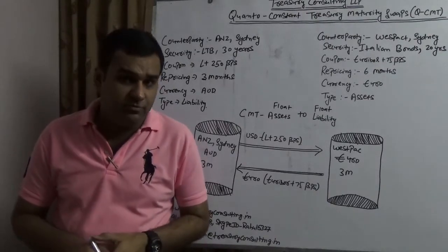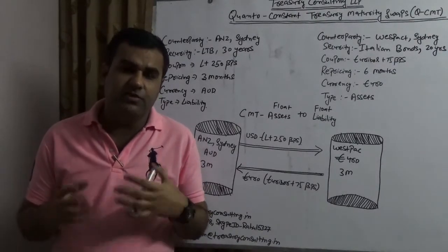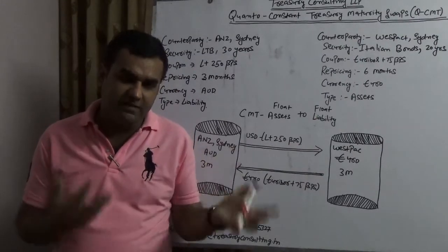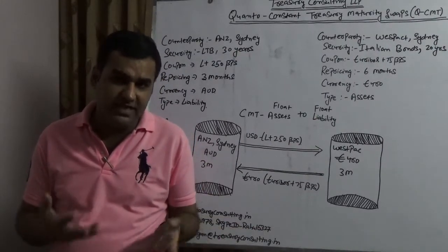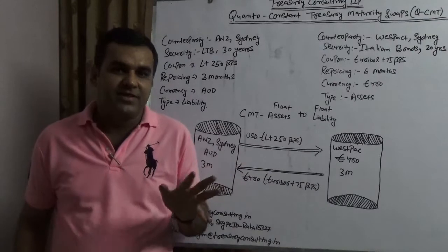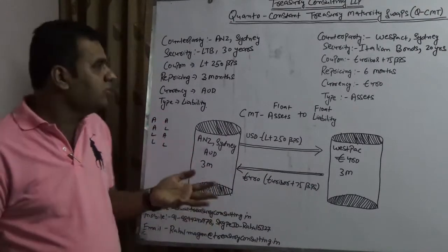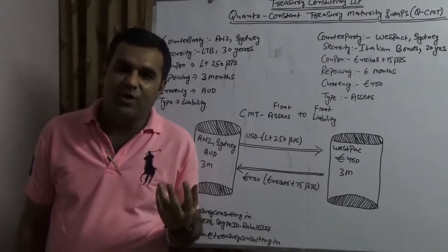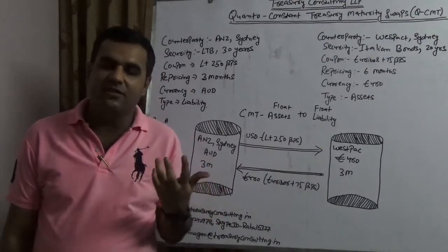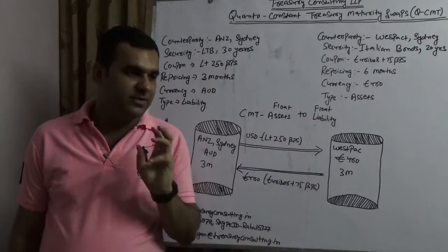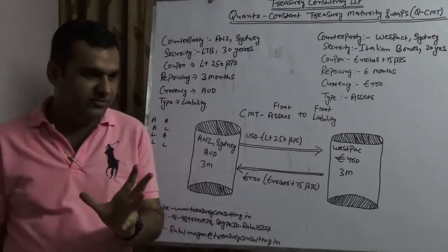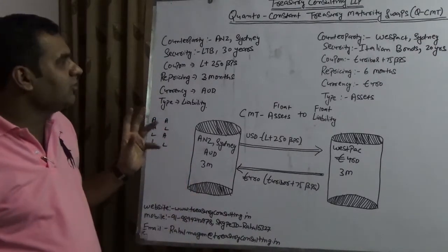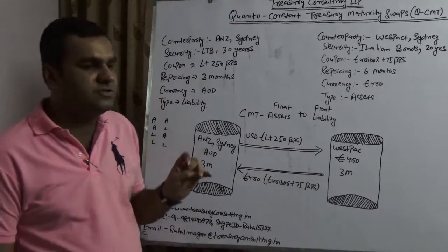Quanto is a very beautiful word. Five years ago when I was reading about Quanto, I was very happy that I learned something new. Quanto is a very fancy word. I don't know why people are using Quanto when the same could be explained using a very simple word called cross currency, but Quanto is a very fancy word. So Quanto constant maturity swap means, let us take two counterparties.